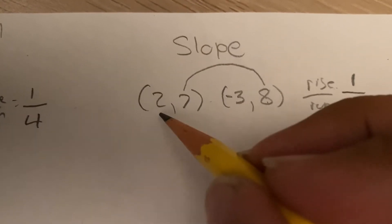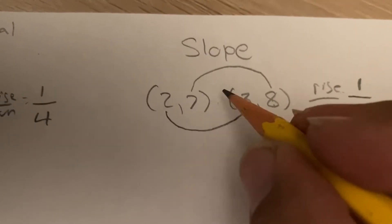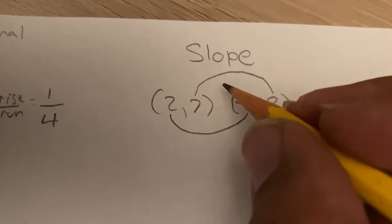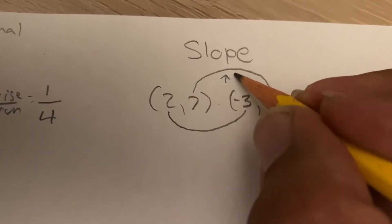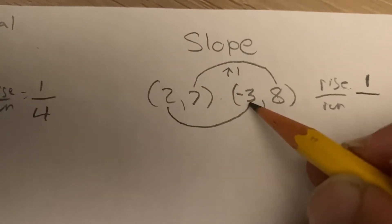How many steps does it take to get from 2 to negative 3? Well, this one's a little bit different because it's not going up. 7 to 8 is going up 1. That's why it stayed positive. This one's going 2 to negative 3. It's going down.